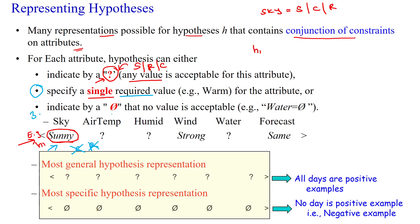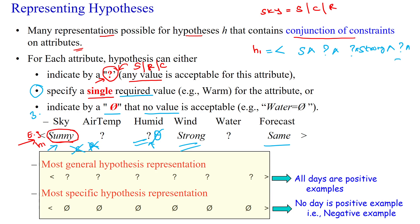The third constraint is the null value. If an attribute is represented with null, then it will not at all accept any value — no value is acceptable. Finally, the hypothesis will have a conjunction of all the constraints on attributes. For example: sunny, conjuncted with '?', conjuncted with '?', then strong, then strong, then '?'. This is the conjunction of constraints on attributes.